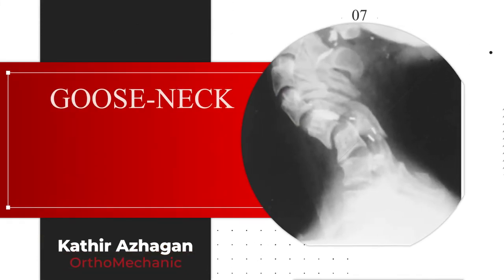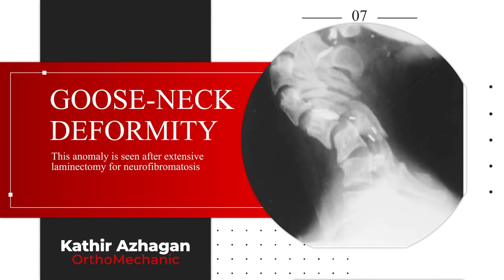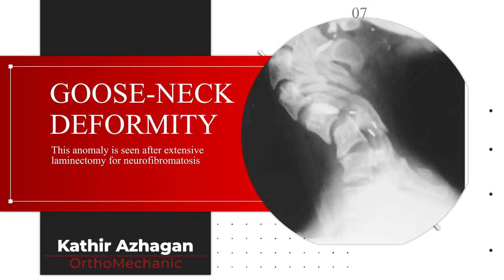Gooseneck deformity, also called swan neck deformity, is seen after extensive laminectomy for diseases like neurofibromatosis, and is thus a post-operative finding. It is caused by dislocation or subluxation of a cervical vertebra, usually seen on lateral view, and is associated with progressive thoracic kyphosis and compensatory cervical hyperlordosis.